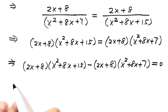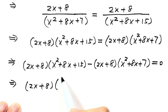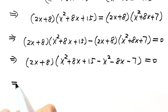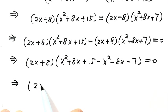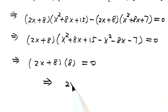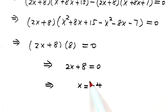Let's take out the common factor (2x+8): (2x+8)[(x²+8x+15) - (x²+8x+7)] = 0. Simplifying inside the brackets: the x² terms cancel, the 8x terms cancel, and 15 - 7 = 8. So we get (2x+8)(8) = 0, which means 2x+8 = 0, giving x = -4. So x = -4 is the solution to this equation.